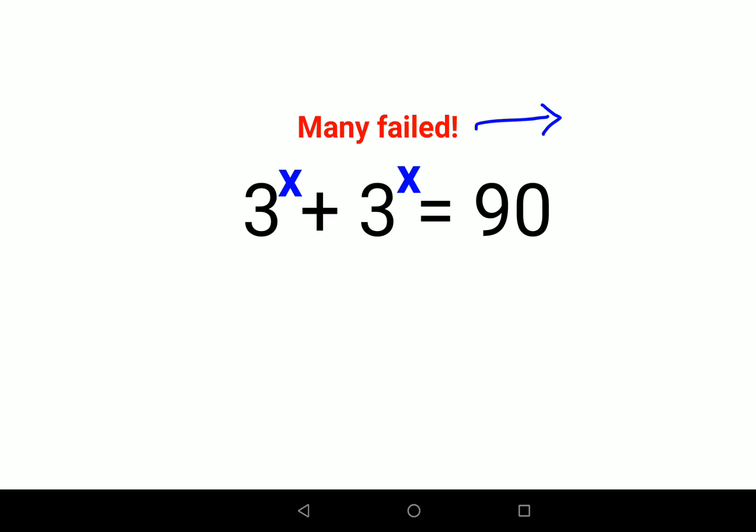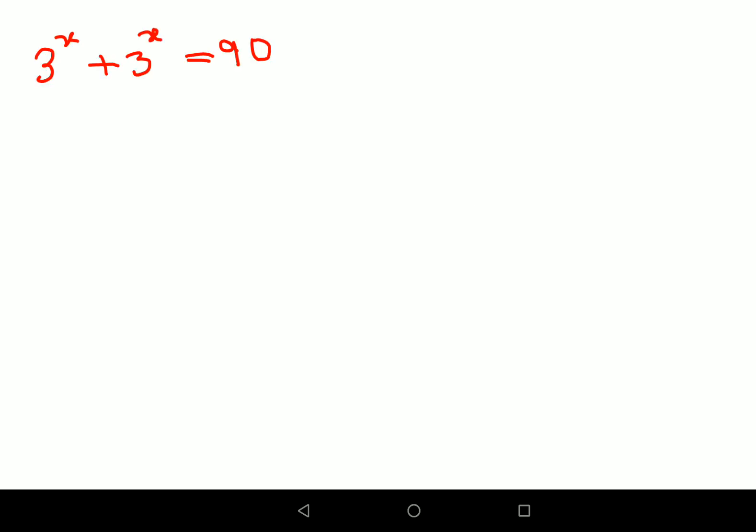Let's try and understand how to solve these kinds of questions. The first thing we can do is see that 3^x + 3^x means we have 2 times 3^x, which still equals 90. So we will divide both sides by 2.